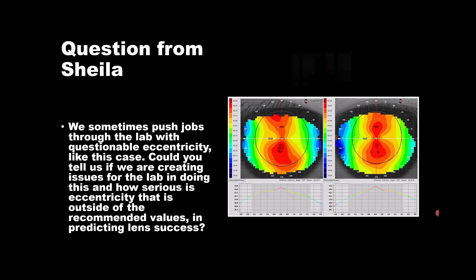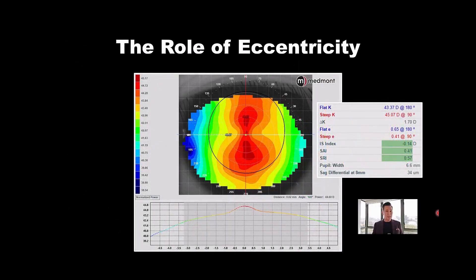Great question. Eccentricity has an important role. John Mountford, again, I'll go back to the godfather of ortho-K or the godfather of modern ortho-K. He explained to us that there are a number of factors that determine candidacy.